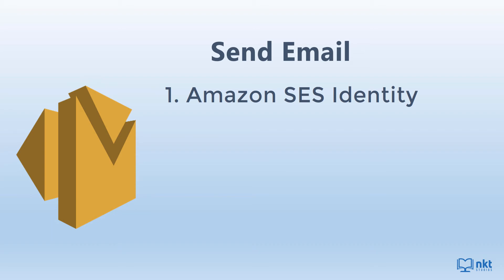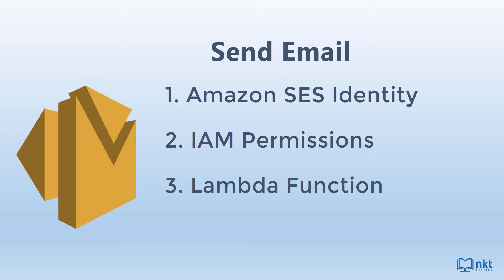The first is an Amazon SES Identity — a verified domain or email address that you use to send emails. It has to be in the region that you want to use Amazon SES, because SES has endpoints in multiple AWS regions and the verification status is separate for each region. Next, you need IAM permissions for Lambda to execute the API call. And lastly, you need a Lambda function with the logic for sending email using Amazon SES.